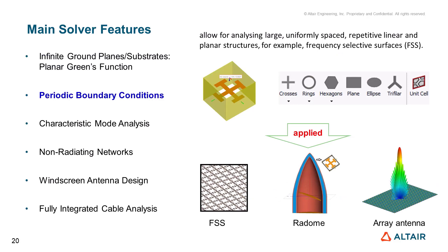Periodic boundary conditions allow for analyzing large, uniformly spaced, repetitive, linear, and planar structures — for example, frequency selective surfaces, commonly known as FSS. These periodic boundary conditions can be applied for FSS characterization, radome design, as well as antenna array designs.